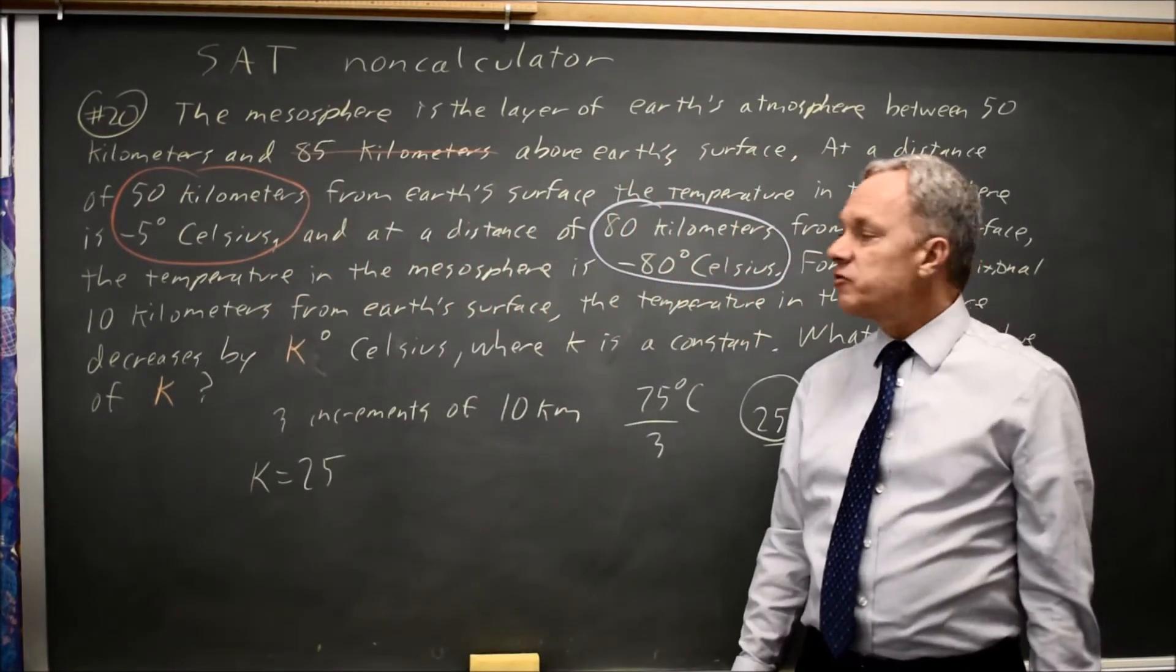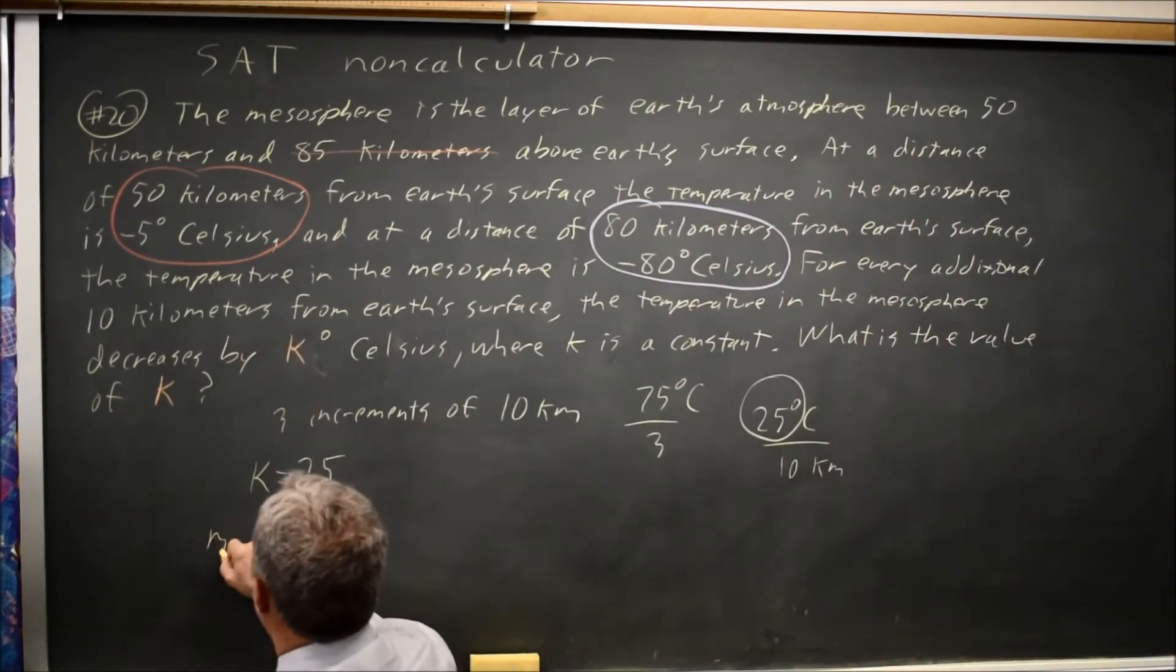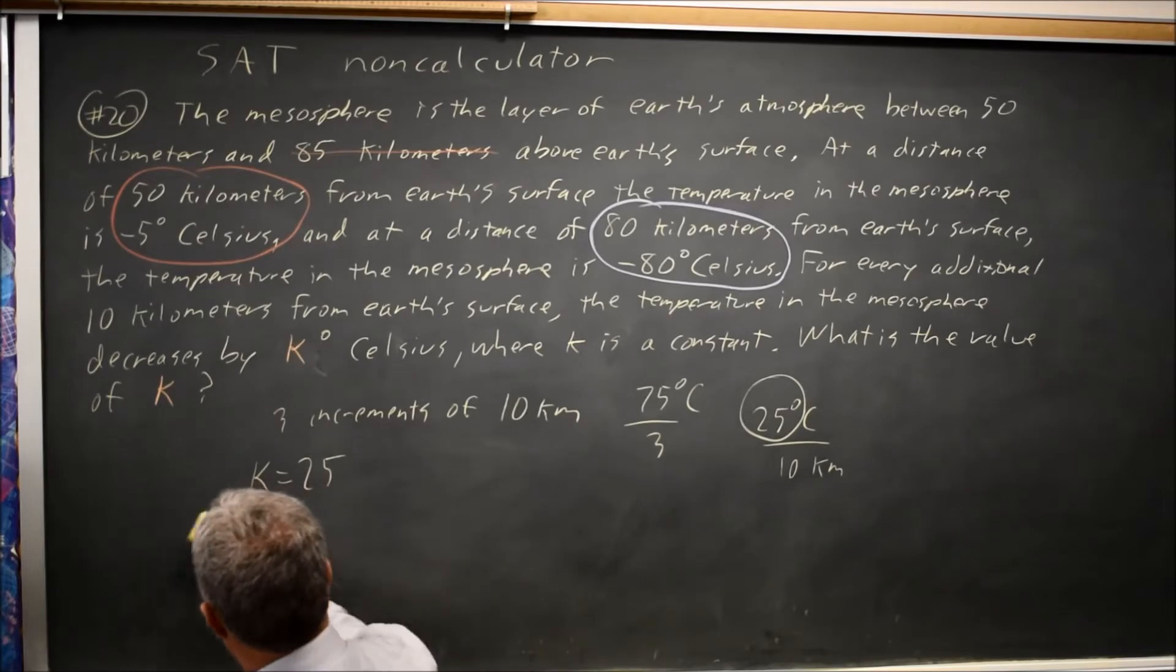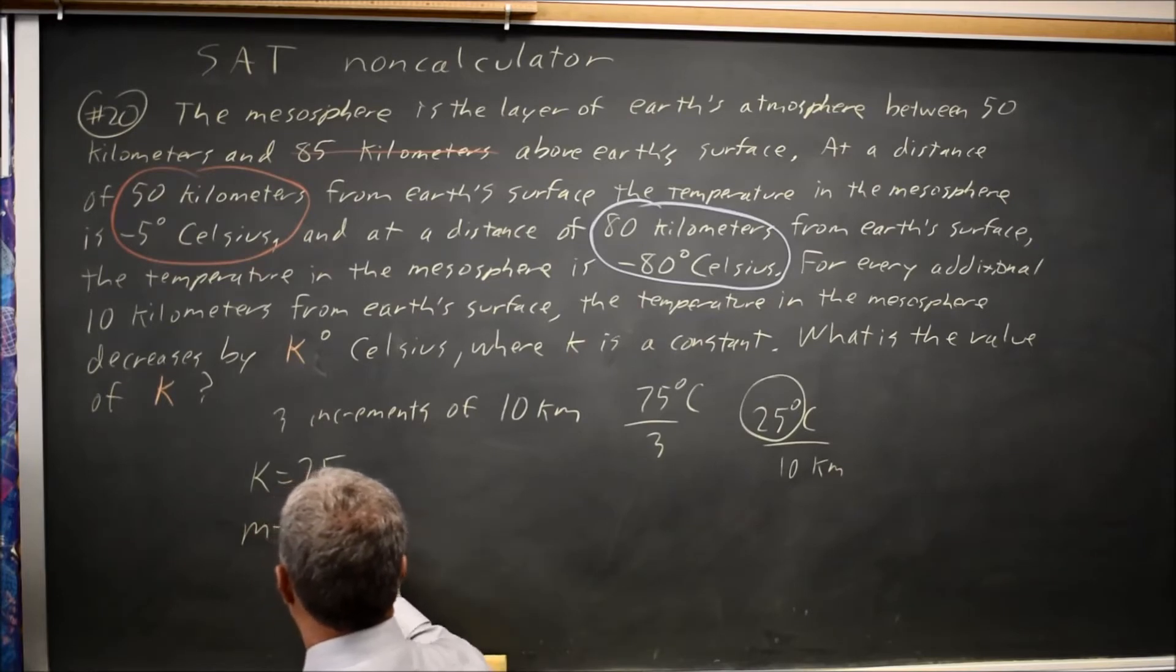You could also find the slope, M. M equals Y2 minus Y1 over X2 minus X1.